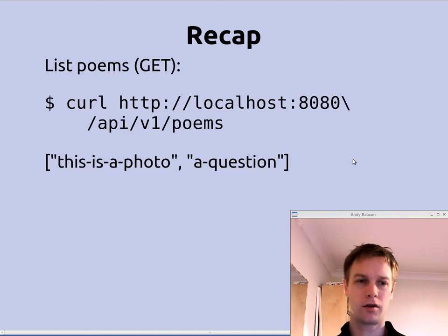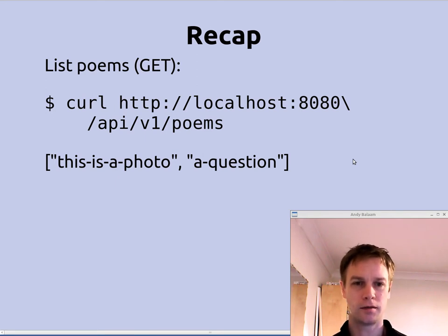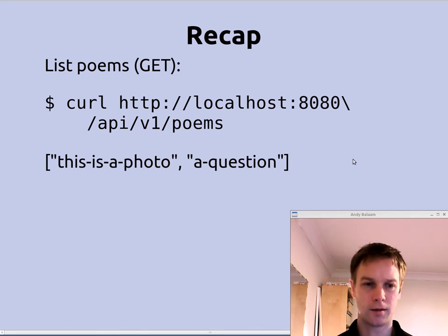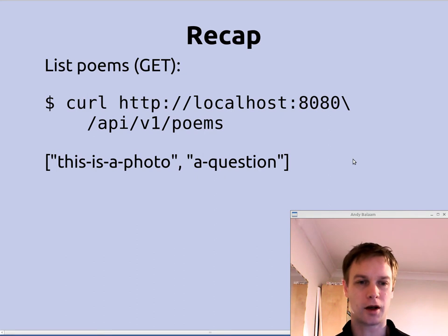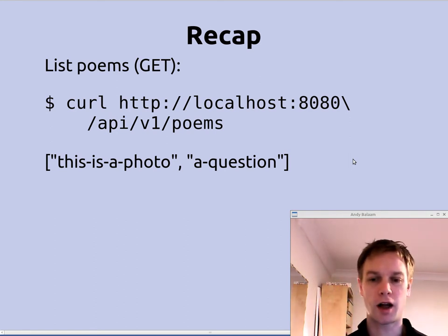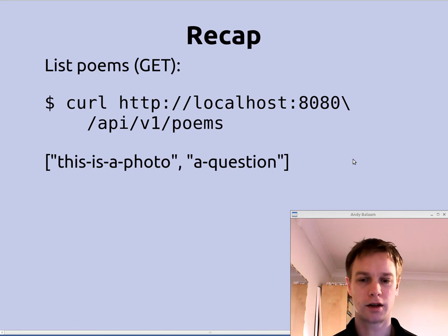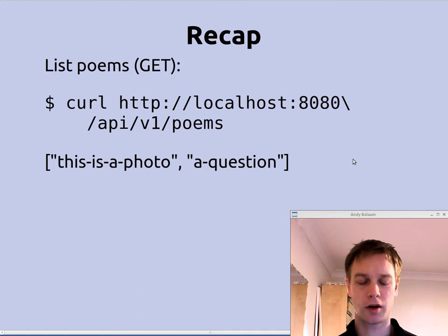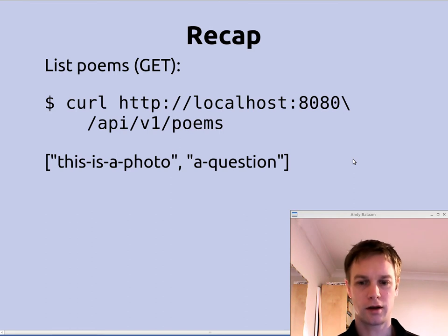This is how you get hold of poems. CURL just makes a web request without using a browser. I'm running it on my local machine, so localhost is running on port 8080. The URL we've chosen is /api — just so we know that's where the REST API lives — version 1 because this is the first version, and then 'poems' is the name of the collection. In REST there's always a collection, and in this case it's called poems. When we get that, we see the two example poems I've put in the system, with their IDs coming back as a list.